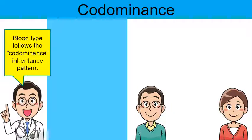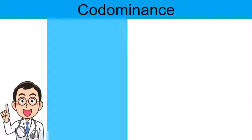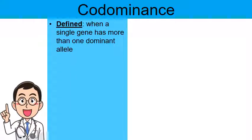Blood type follows the codominant inheritance pattern, and that's the topic of this video today. We're going to learn about codominance using blood type as our example. Codominance is when a single gene has more than one dominant allele — we haven't seen that before with the other genetic patterns we've learned so far.